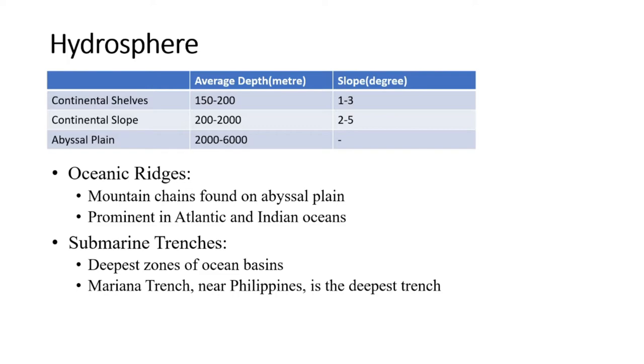Third relief feature is abyssal plain. It is a flat zone compared to the plain part of the land surface. It has almost 0 to 0.5 degree of slope and covers almost 40 percent of the total area of the ocean basin having an average depth of 2,000 to 6,000 meters. These plains are more extensive in those areas where sediments of land origin are abundantly supplied.